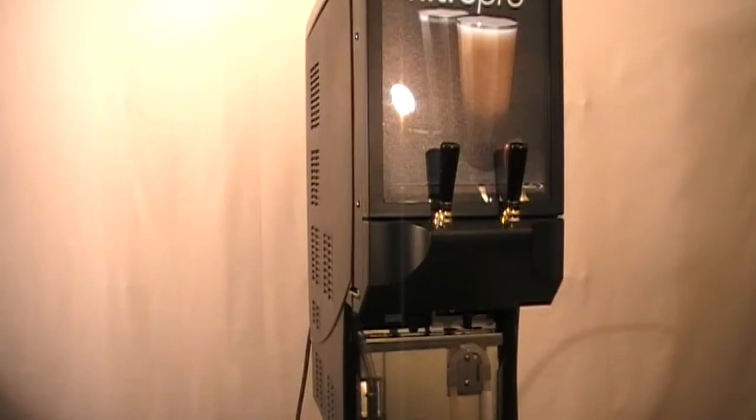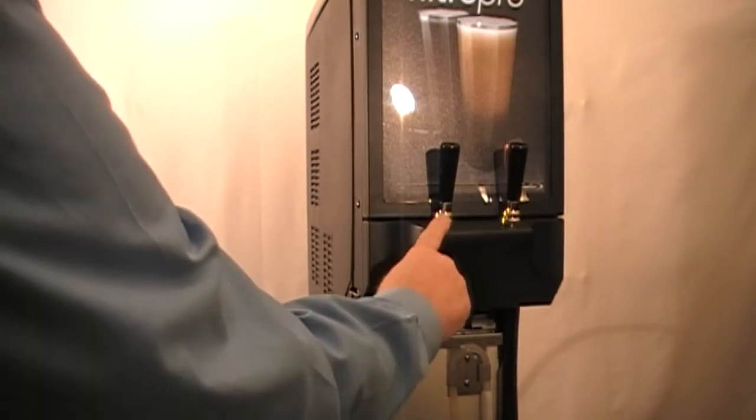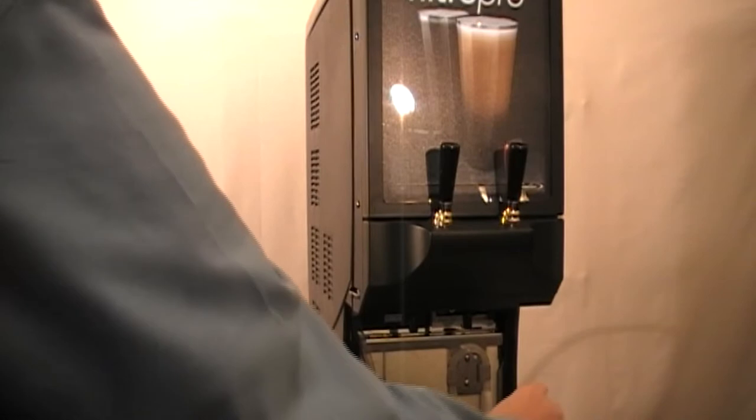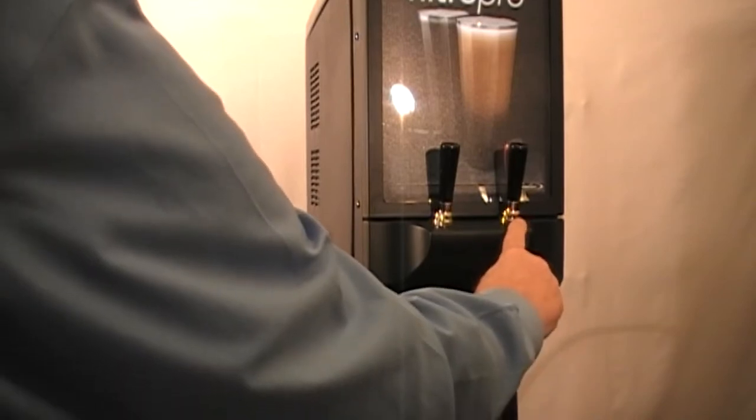The unit is pre-plumbed at the factory, so when the water and concentrate connections are made, the left dispense tap will be the plain cold brew coffee, and the right dispense tap will be the cold nitrogen infused coffee.